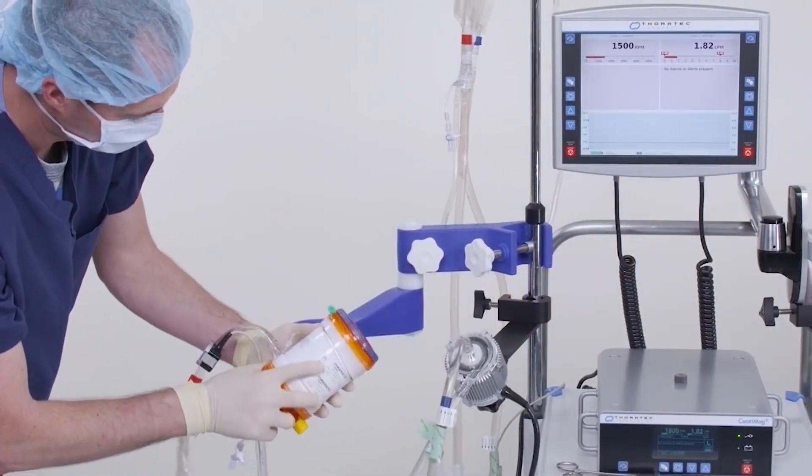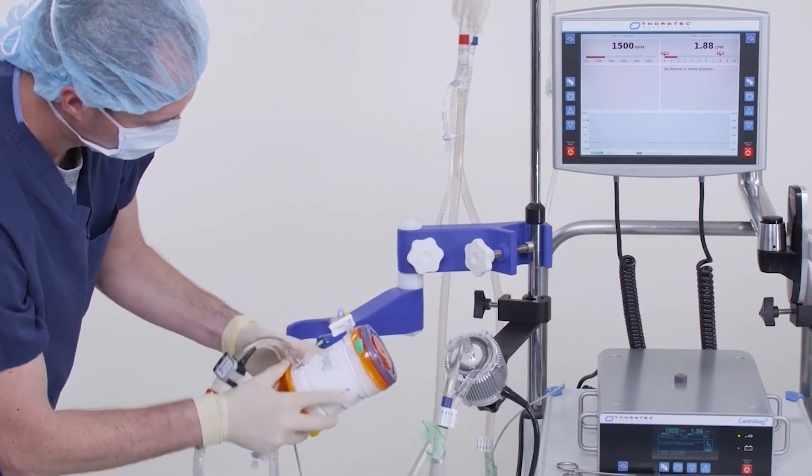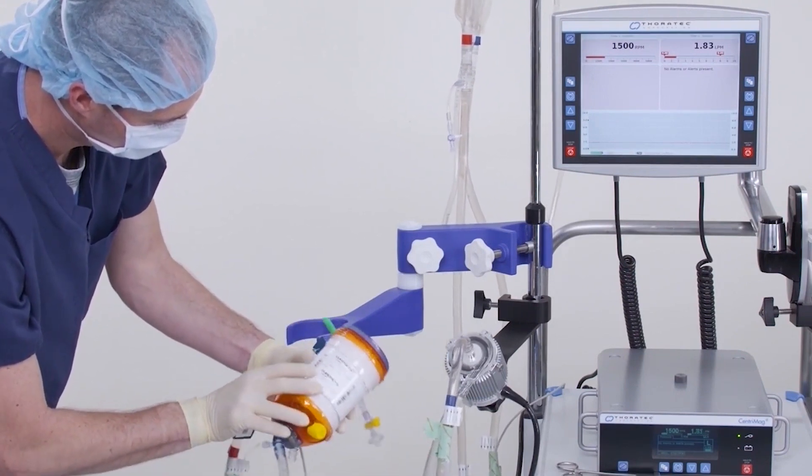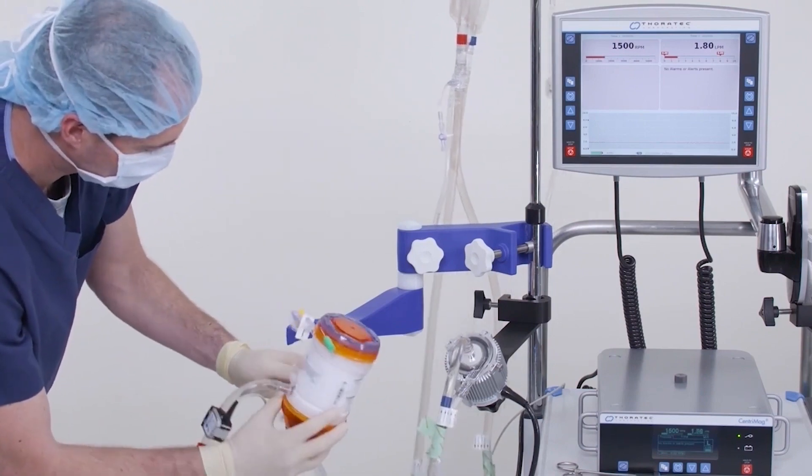Allow the fluid to recirculate through the circuit for 3-5 minutes to remove any micro-bubbles. The oxygenator may be repositioned to release any trapped air within the membrane.